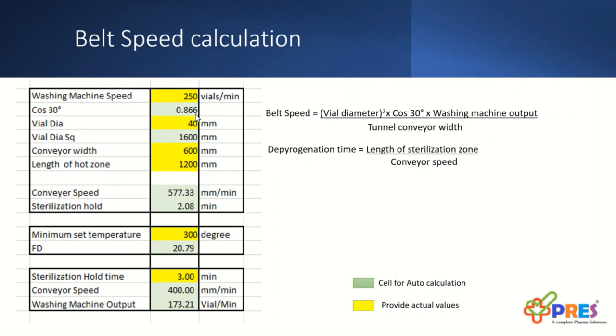This is the table. The yellow one is your input value, and green one will be auto-calculated. Two tables give you options. If you want to go with 3 minutes, after placing all the data you can place 3, it will show you the conveyor speed and washing output. If you don't want to reduce your outcome, my suggestion is you change the minimum set temperature.